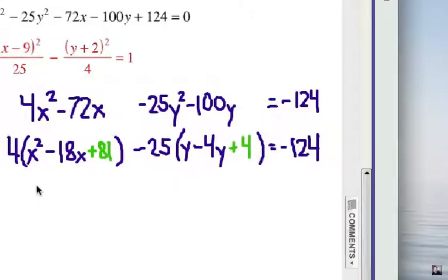Now what did we really add? Well, we added in 324 because it's 4 times 81 there, right? And we also added in negative 100. All right, that's actually 224. So we're going to add 224 to the right-hand side.